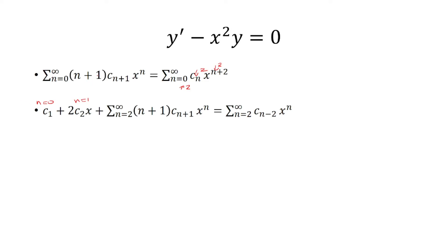Plugging in n equals 0 gives 1 times c sub 1 times x to the 0, which is just c sub 1. When n equals 1, you have 2 times c sub 2 times x to the first power. At this point we can compare both sides. There's no constant term c sub 1 on the right side, so c sub 1 equals 0. Likewise there is no x term; the right side starts at x squared. So c sub 2 should also be 0.